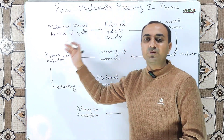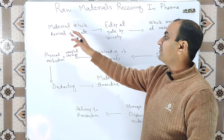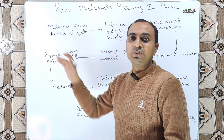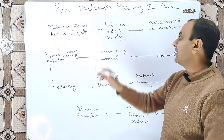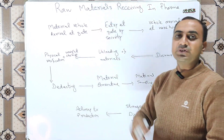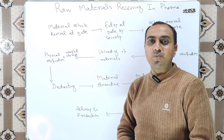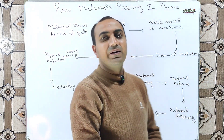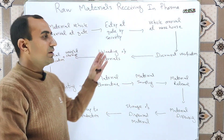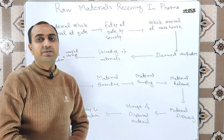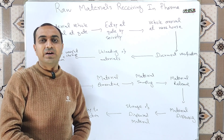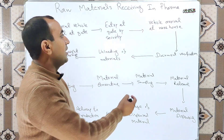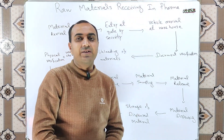First, the material is delivered by a vehicle to the pharmaceutical industry. The vehicle arrival at the gate is the first step. Next is the entry of the vehicle after document verification at the gate by the security department. When the vehicle is cleared by the security department, it is allowed to go inside towards the warehouse.